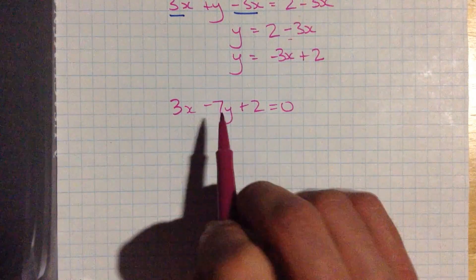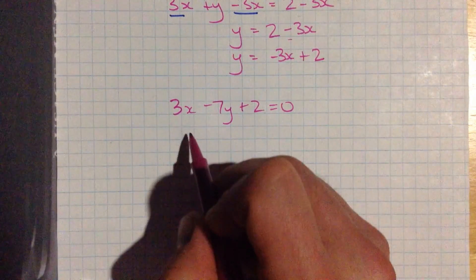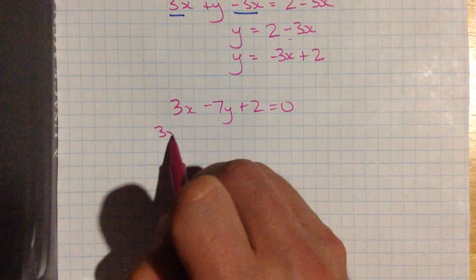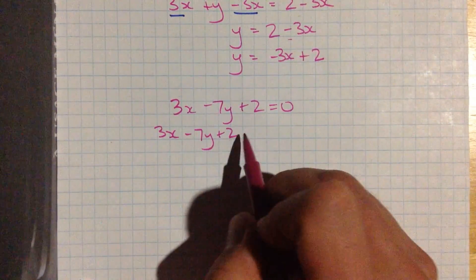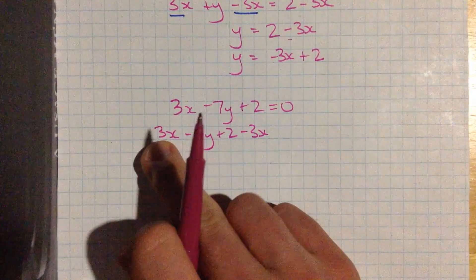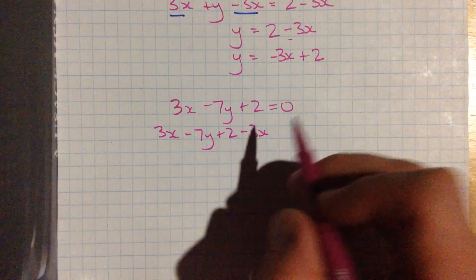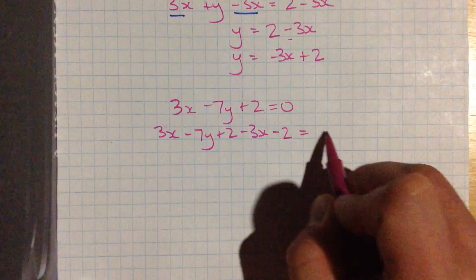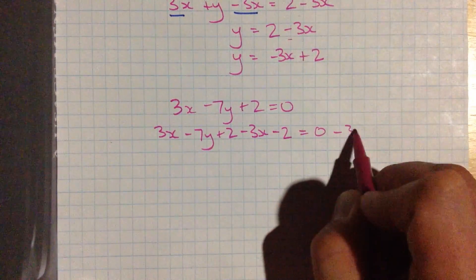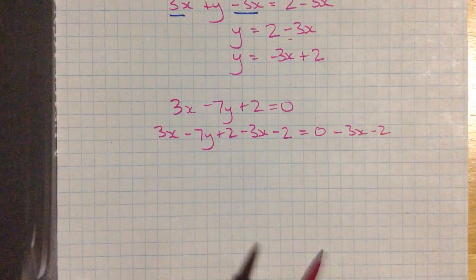I want to get this y by itself, so let's get rid of everything else. I'm going to write it out like this. I want to subtract 3x because it's a positive 3x here. Subtracting 3x is going to clear it out. And I also want to subtract 2 to get rid of this negative 2. So that's 0 minus 3x minus 2 on that side.